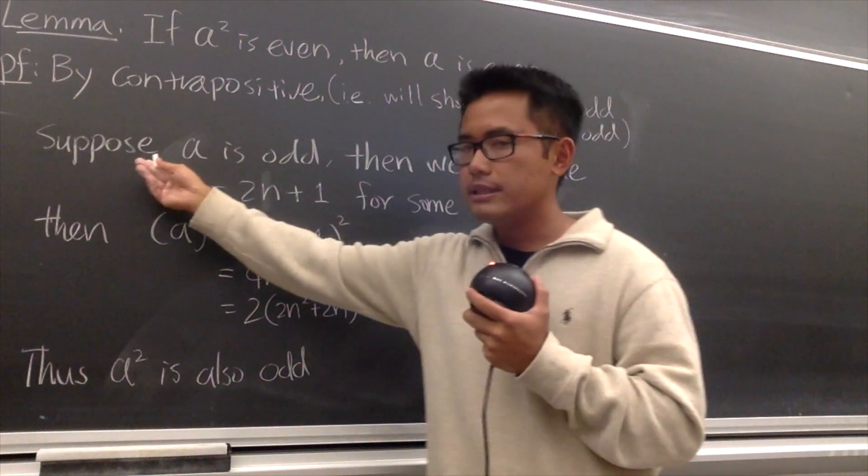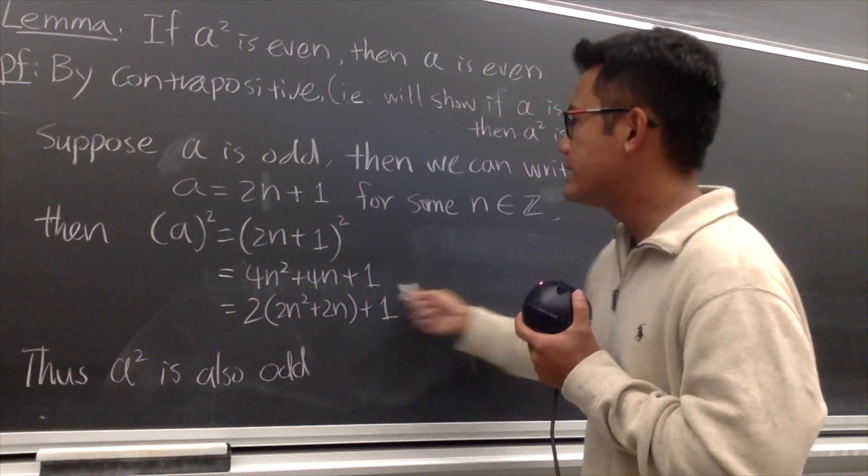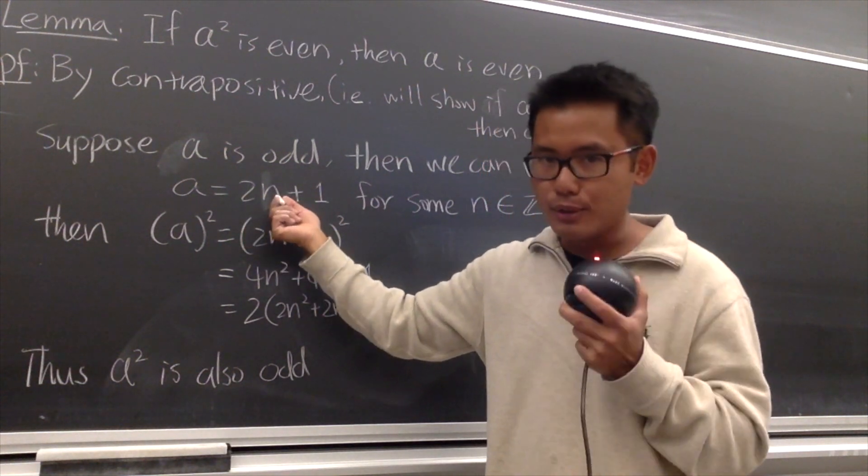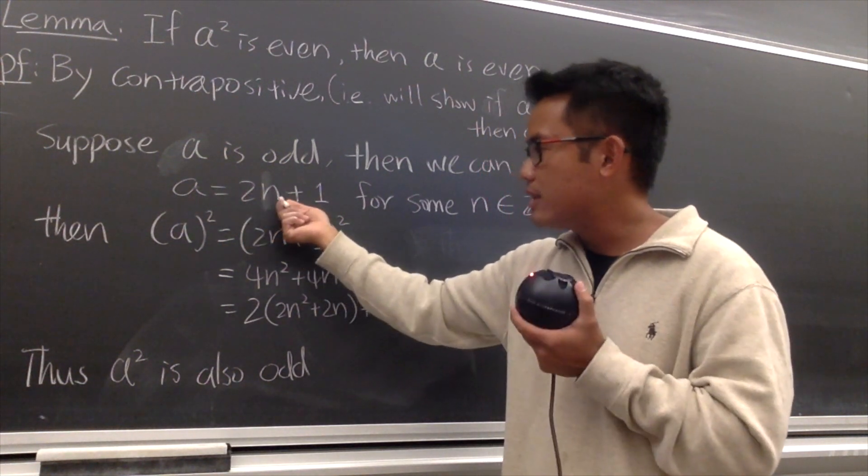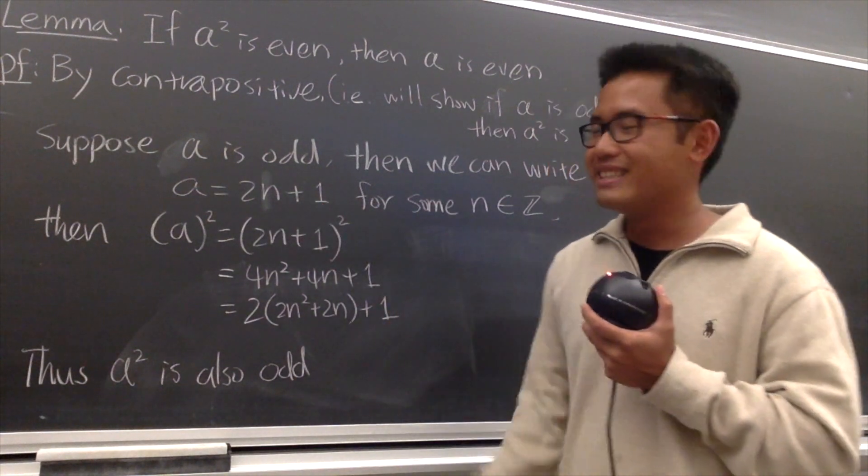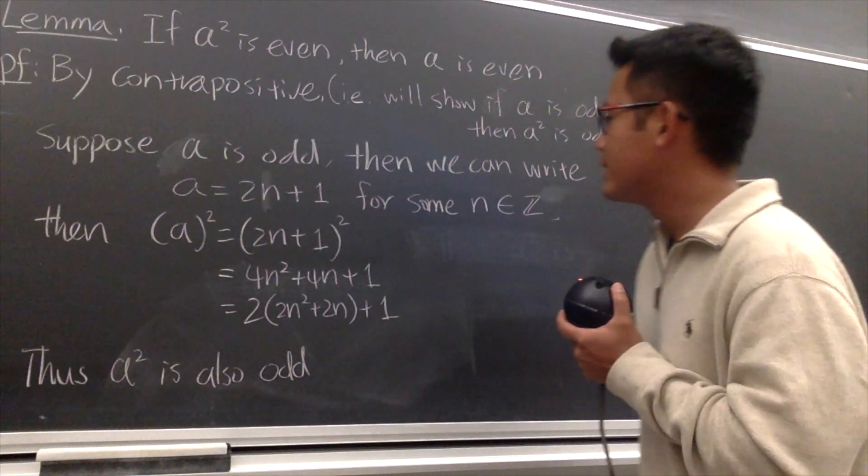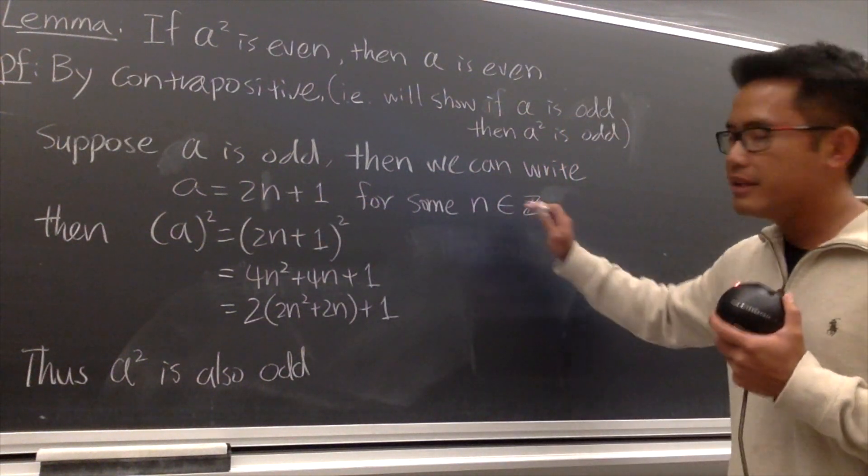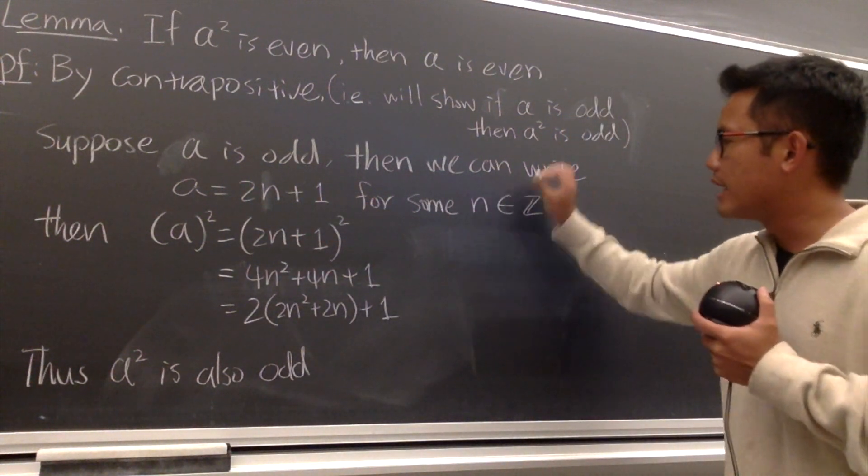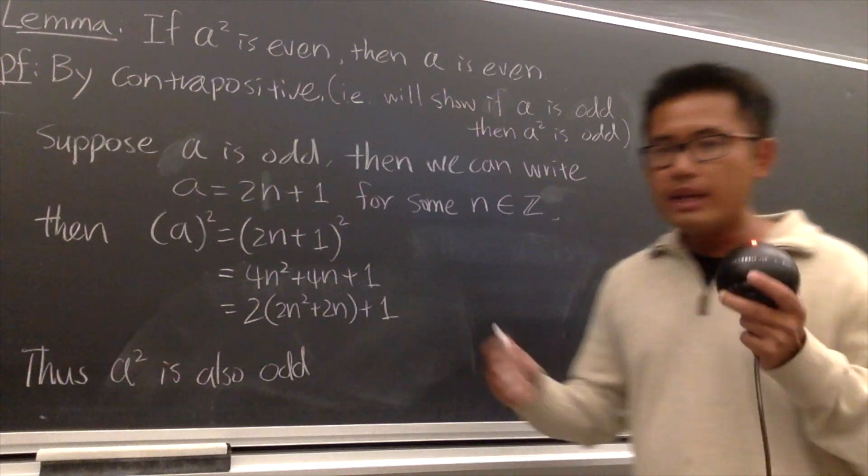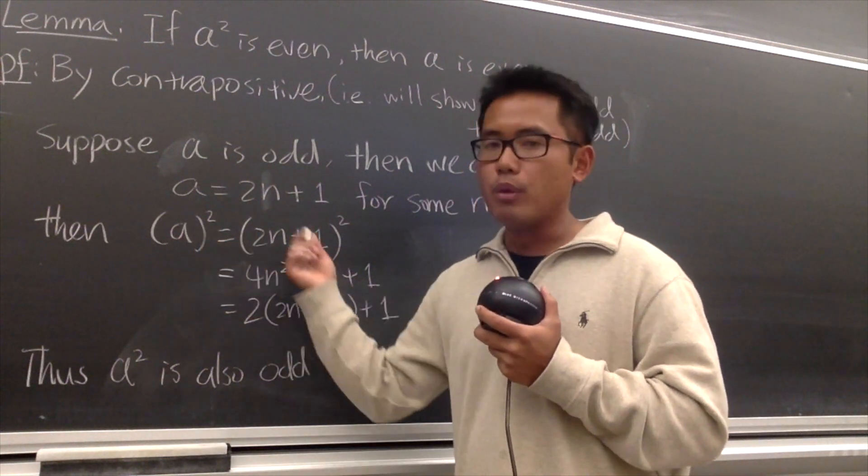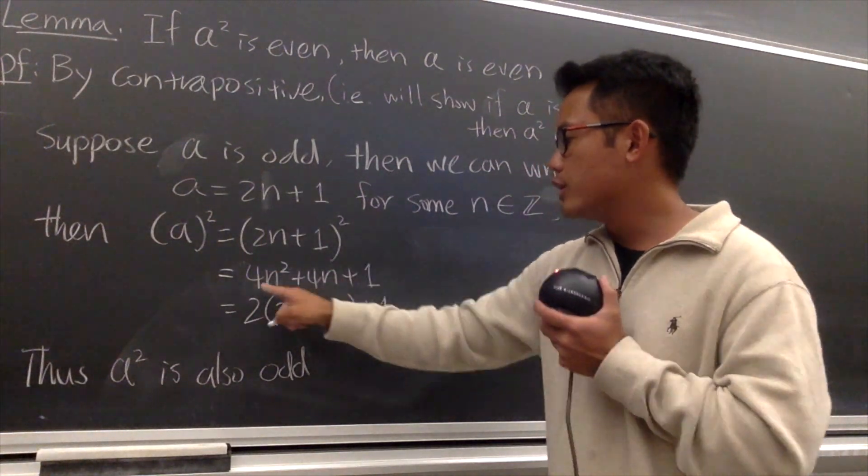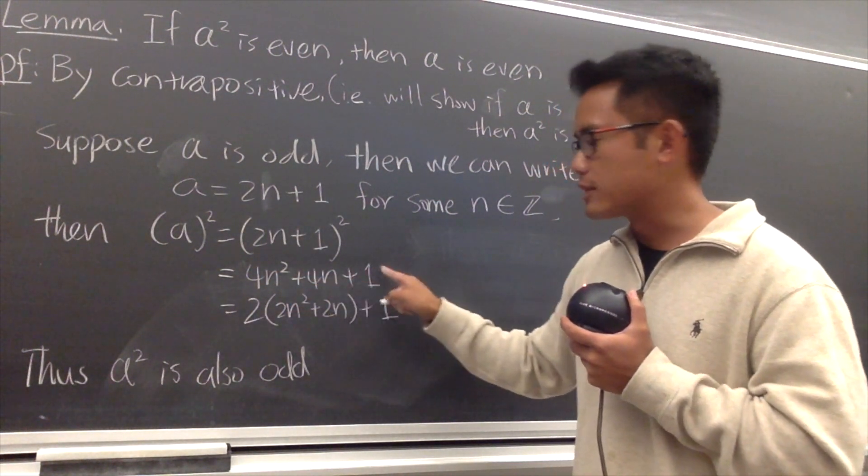OK, so suppose a is odd. Then we can write a as 2 times an integer plus 1. So we write it down as a equals 2n plus 1 for some n in Z. Once again, this means that n is an integer. Then, what we are going to do is square both sides. a squared will be the square of this, so just multiply this out, you get 4n squared plus 4n plus 1.